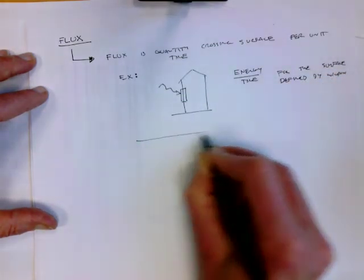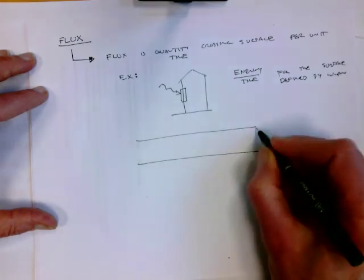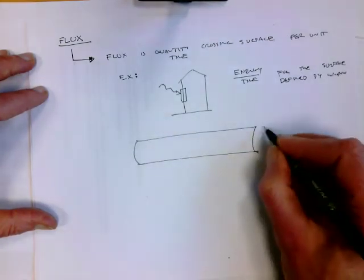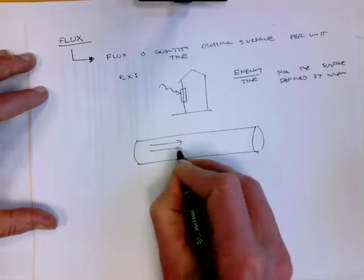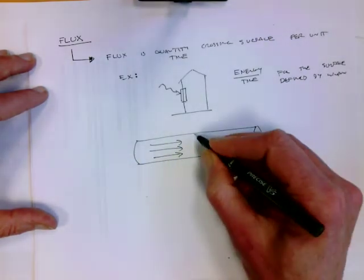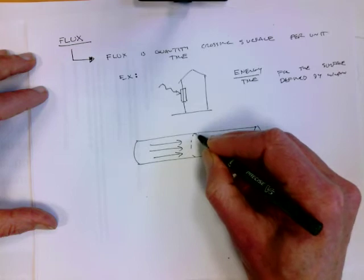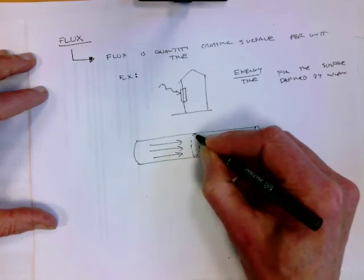I could also imagine talking about the flux of mass. Say I've got a pipe with water flowing in it. If I imagine taking an imaginary cross section of the pipe, here is a surface that I'm defining inside the pipe.